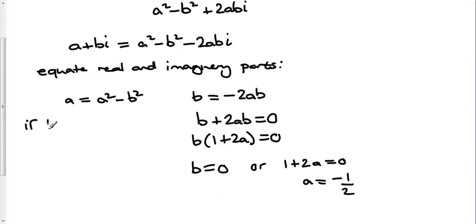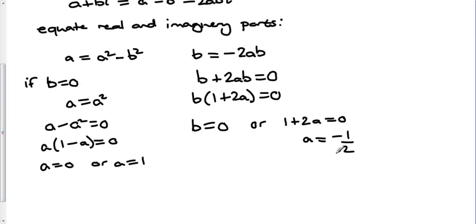So I'll start off with, well if b is 0, then that means a would be equal to a squared. And once again don't divide through by a because you'll lose one of your solutions. If we take a squared away from both sides, factorize out our factor of a, we've got the fact that a equals 0 or a equals 1.